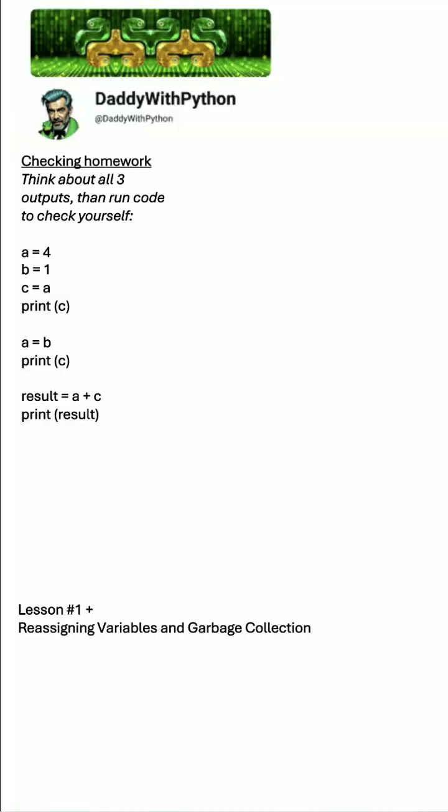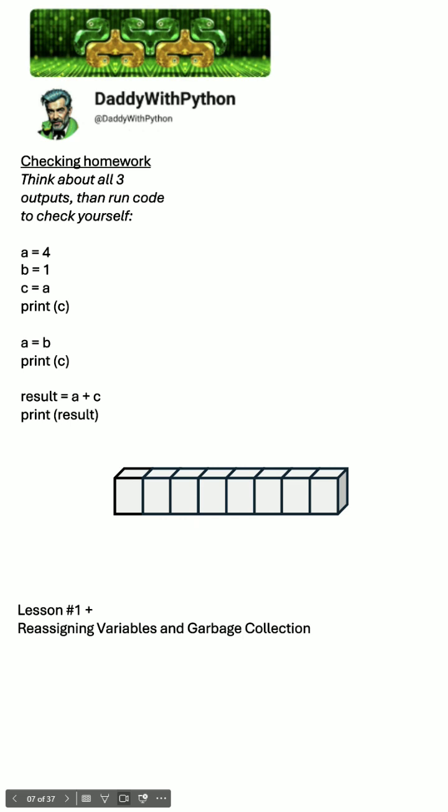A variable is created the moment you first assign a value to it. This creates a pointer in memory. Let's imagine somewhere in memory we're storing value 4. Now let's create a variable a which is pointing on it. Its type will be declared as an integer automatically.